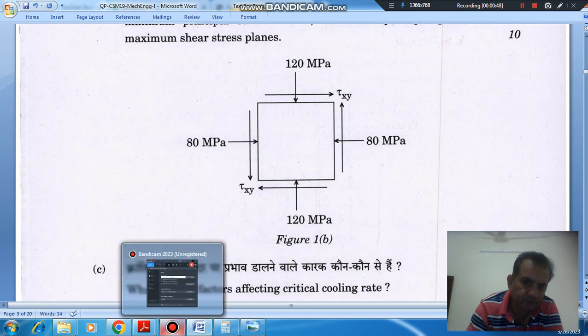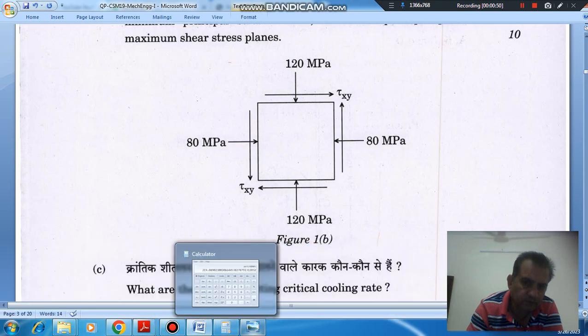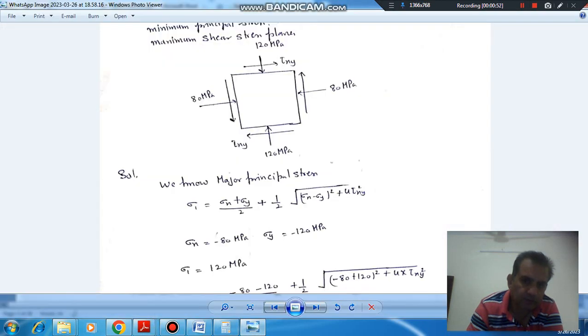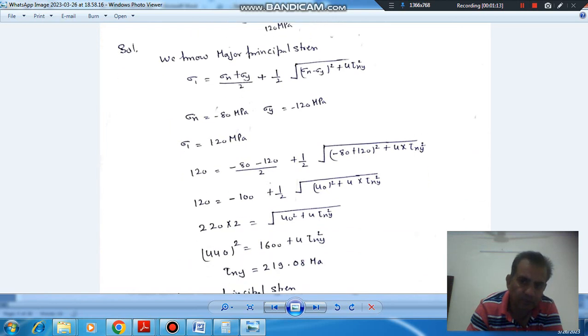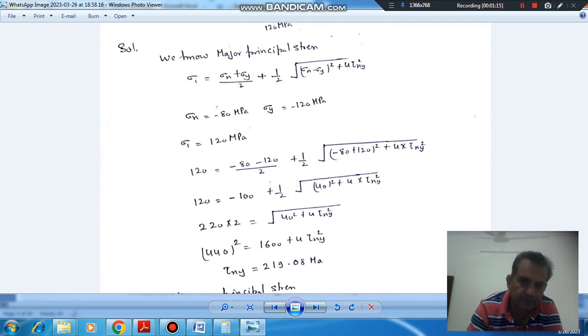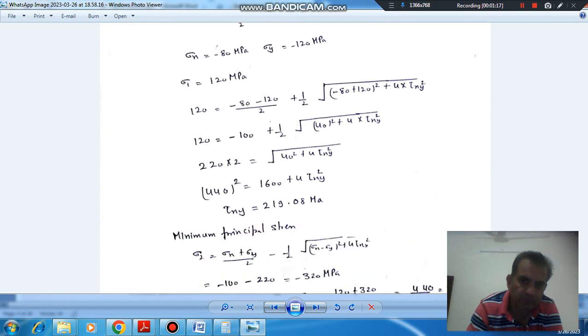Using the formula for major principal stress: Sigma 1 equals Sigma X plus Sigma Y by 2 plus 1 by 2 square root of Sigma X minus Sigma Y whole square plus 4 Tau XY square. Major principal stress is given as 120 MPa, Sigma X is minus 80 MPa, Sigma Y minus 120 MPa. Putting the values, we can find Tau XY. So Tau XY is 119.08 MPa.